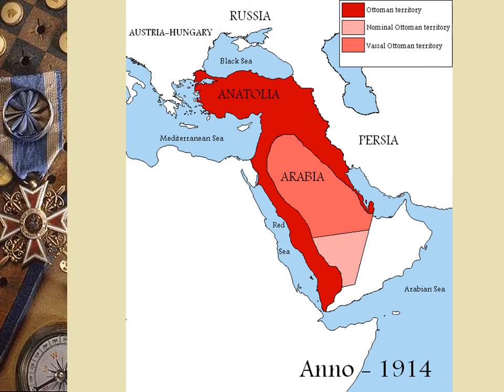The Ottoman Empire used to keep all these different Slavic peoples and ethnicities together under one empire. But now that the empire was shrinking, they were starting to assert their own ethnicity, and ethnic, racial, and religious conflict started to rise in the early 1900s. Gavrilo Princip was part of that. The Austro-Hungarian Empire came in to take over, not realizing they were stepping into a cauldron.